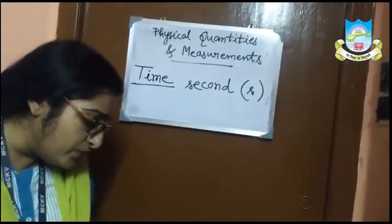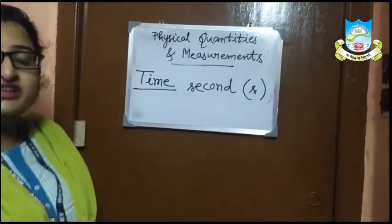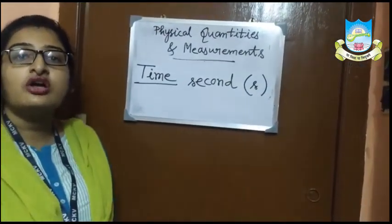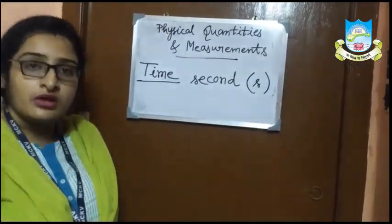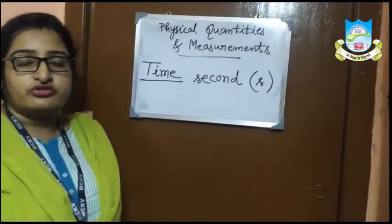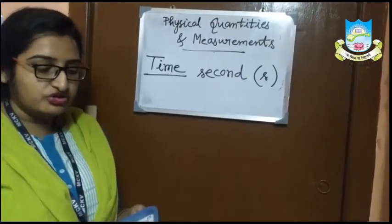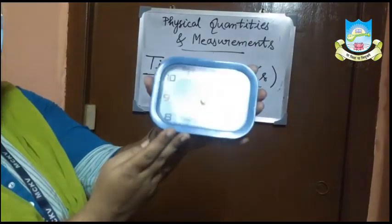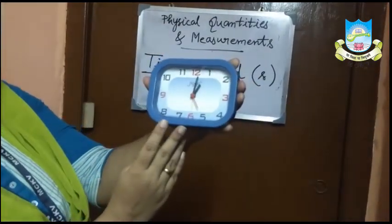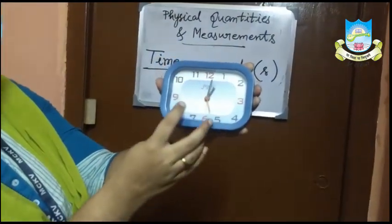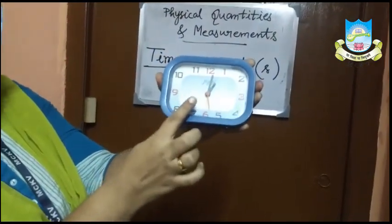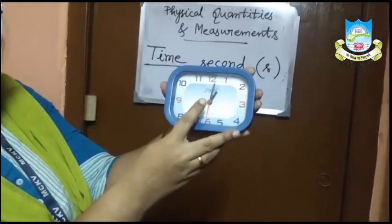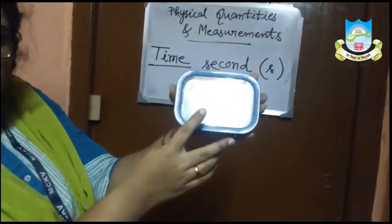We can use a wristwatch, a wall clock, a table clock, a stopwatch — anything for measurement of time. Here we have this table clock. According to the position of the hour hand and minute hand, the time is 1 PM right now.